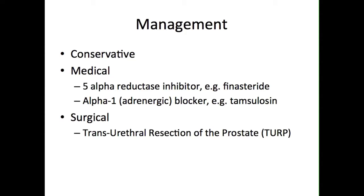However, these drugs can take up to 6 months to be effective. In contrast, alpha-1-adrenergic blockers act selectively by reducing the smooth muscle tone of the prostate and the neck of the bladder, leading to reduced resistance to micturition and relief of symptoms. These effects tend to be more immediate, and so alpha-1 blockers and 5-alpha-reductase inhibitors can be thought of in the same way as salbutamol and steroid inhalers in the treatment of asthma, in that one is a preventer and one is a reliever of symptoms.